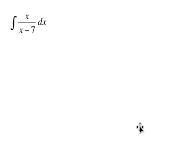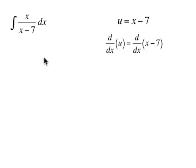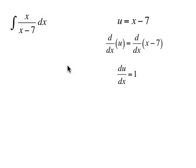Let's take a look at this question: we have the integral of x over x minus 7 dx. This time we're going to let u equal x minus 7, and take the derivative with respect to x of both sides. The derivative of u with respect to x is du/dx, and the derivative of x minus 7 is just 1. Multiplying both sides by dx gives du equals dx.